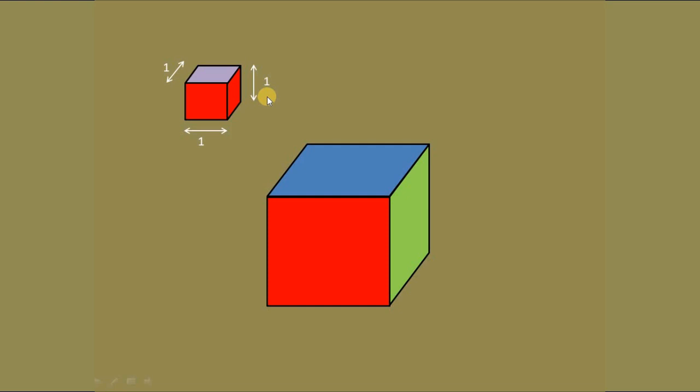And it will look like this. Then we're going to find now the volume by counting the small boxes.